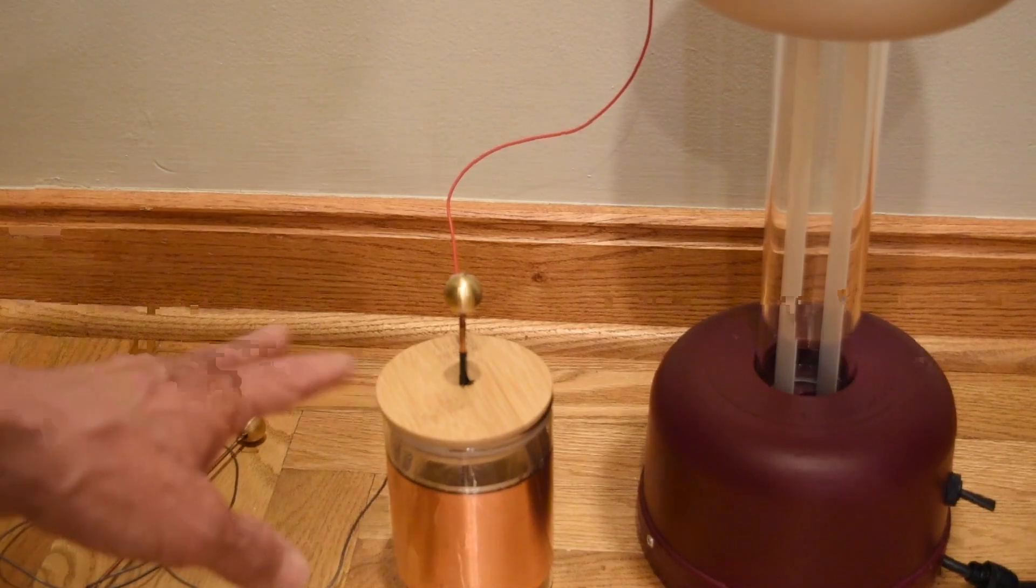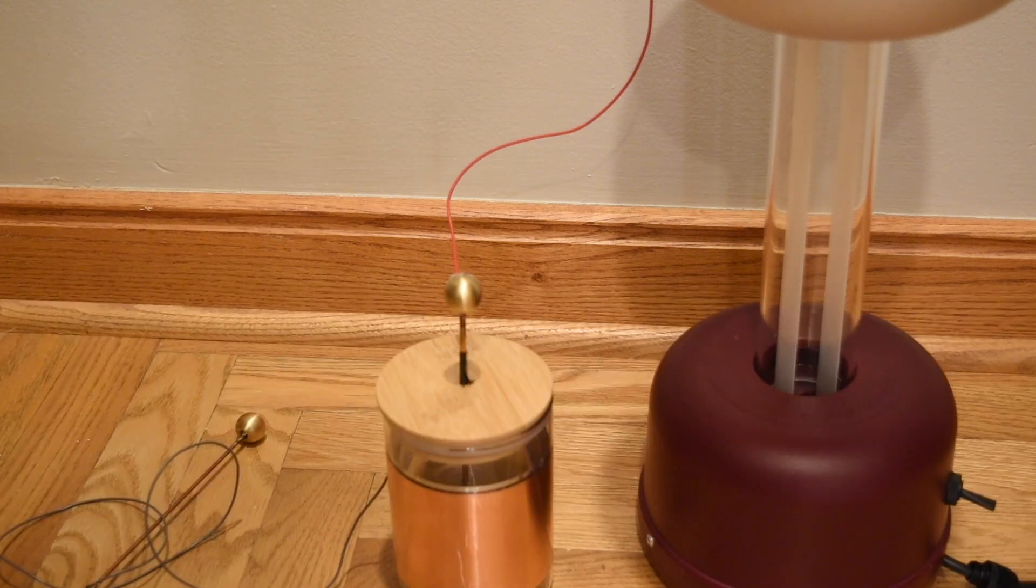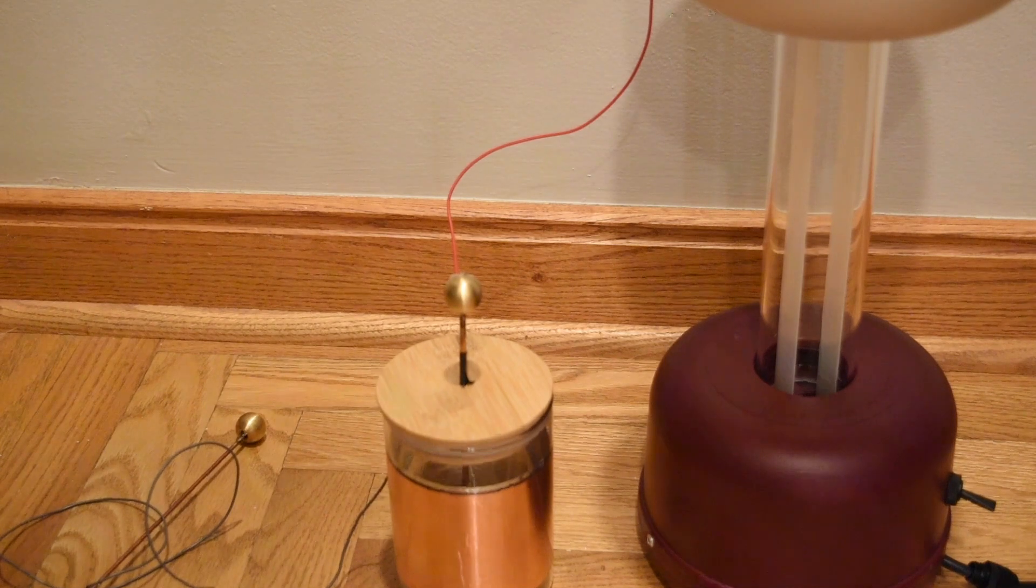The sparks we were getting from the Leiden jar were much more intense than the sparks we were getting from the Van de Graaff generator because there was a lot more charge on the capacitor and so there was a lot more current in those sparks.